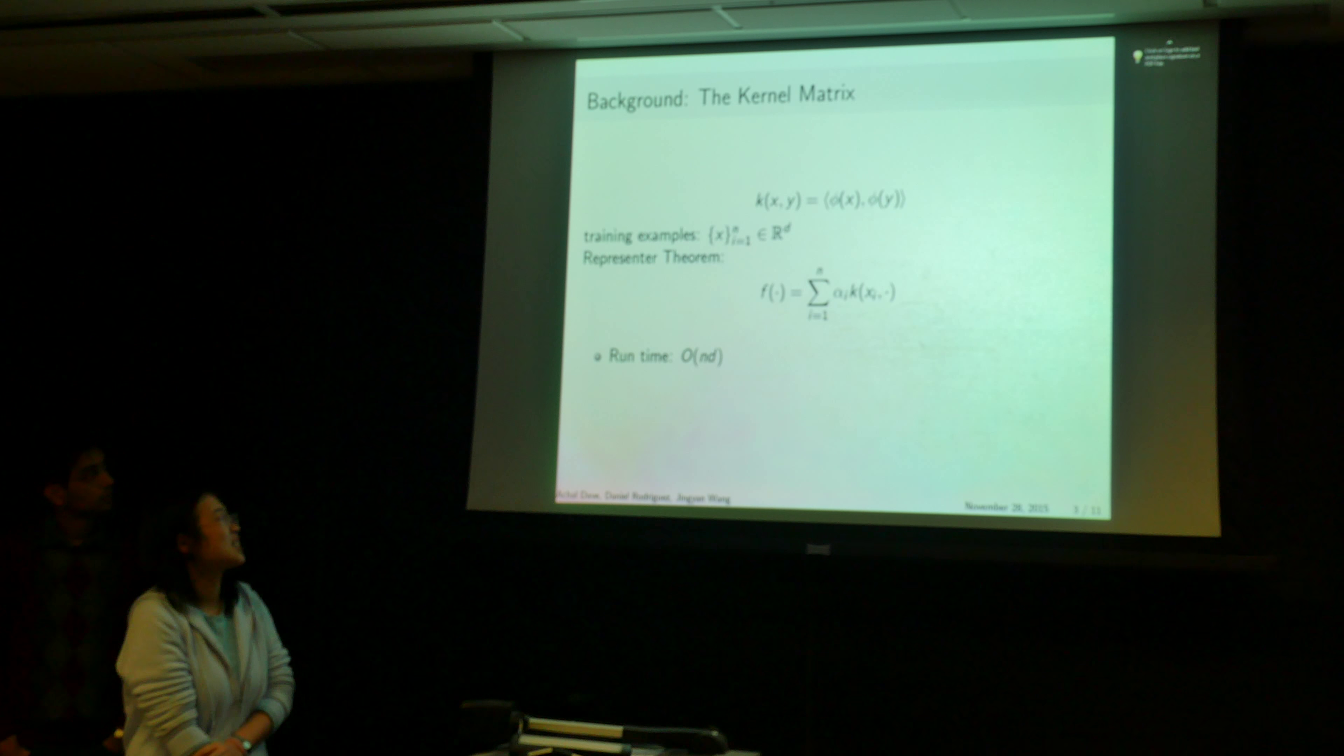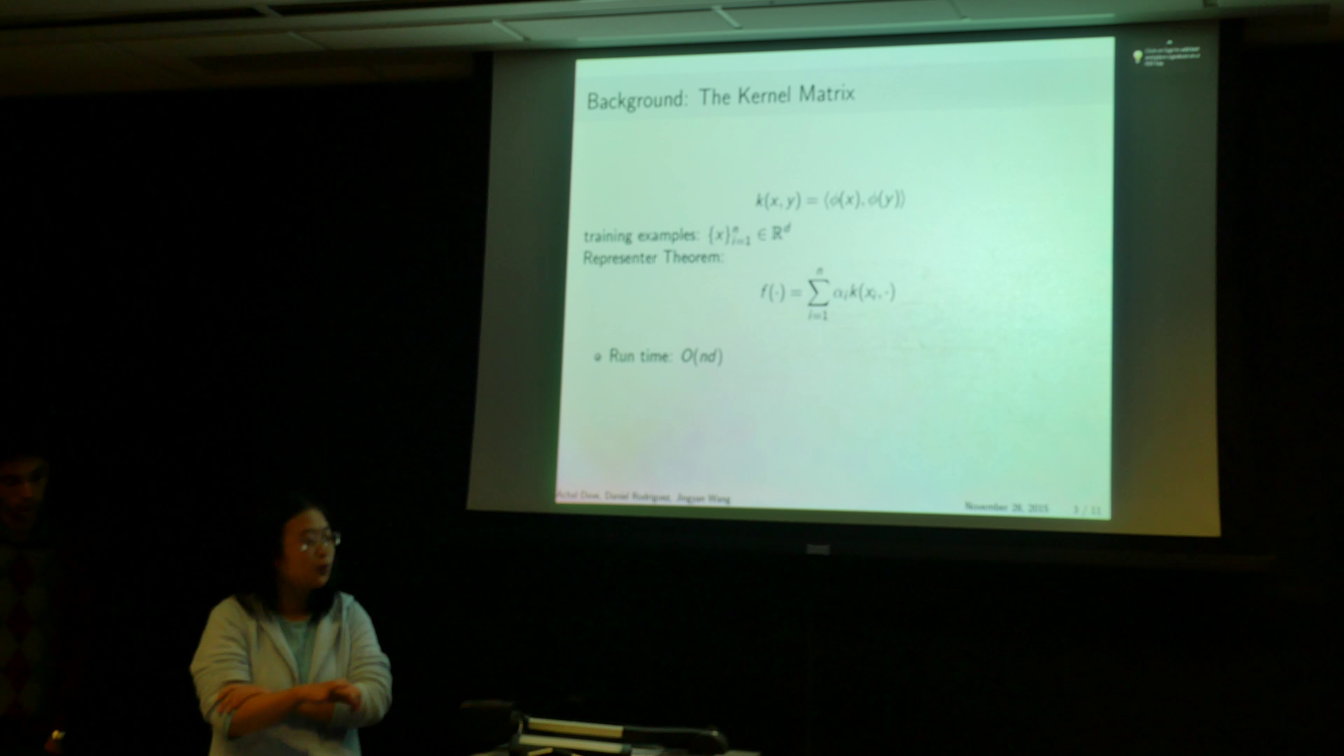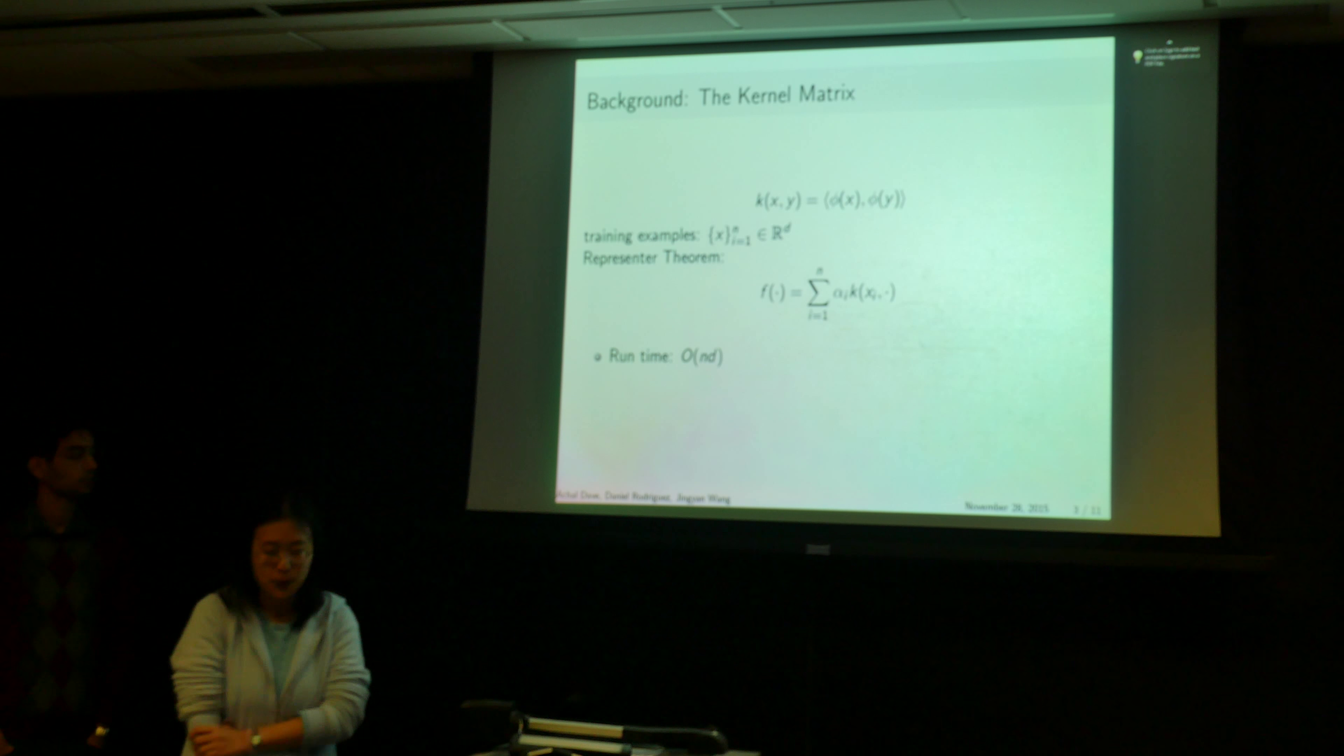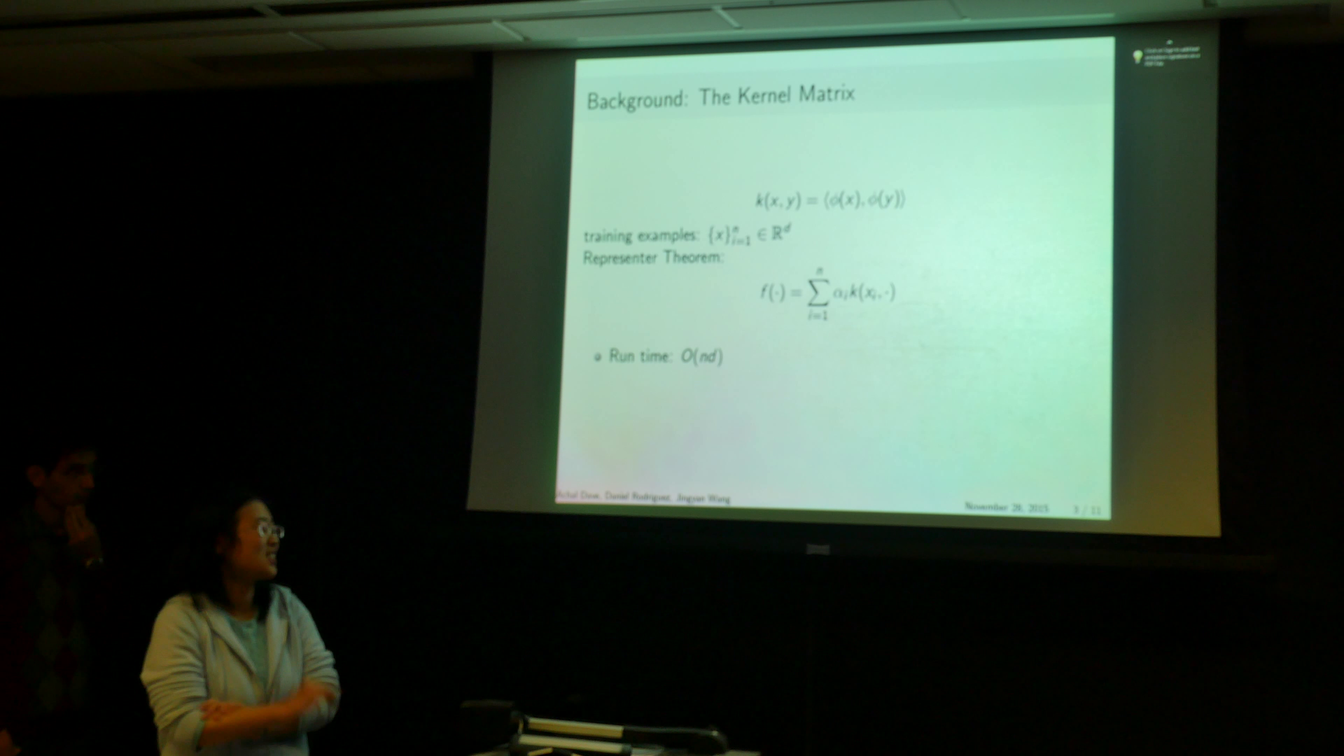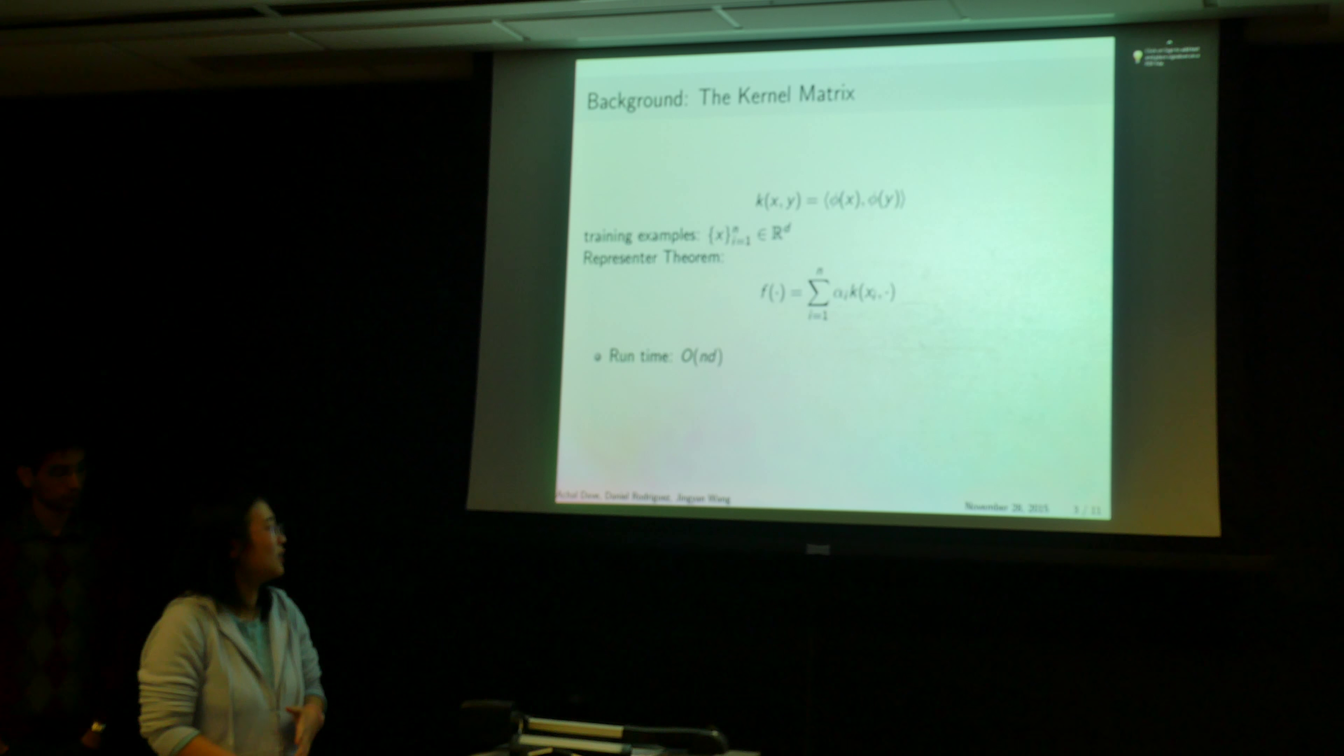As we learned in the class, a kernel can be considered as the inner product in a feature space. And assume we have N training samples in D dimension. And by the representer theorem, we can write the decision function as a linear combination of the training samples. So this means at test time, making predictions are expensive because the time is linear to the number of training samples. And in large-scale data sets, doing this prediction for each new sample is infeasible.